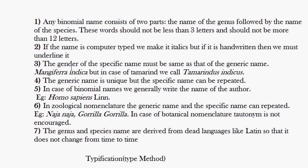The next rule is that the gender of the specific name must be the same as the gender of the generic name. For example, Mangifera indica and Tamarindus indicus are the scientific names of mango and tamarind. Mangifera ends with 'a', so indica also ends with 'a'. But when it becomes Tamarindus, ending in 'us', the specific name becomes indicus.